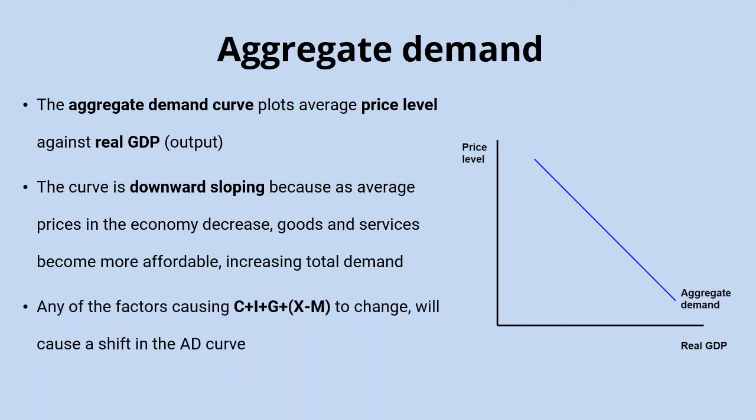Just like with demand, the position of the aggregate demand curve can change. The total aggregate demand is made up of its components: C plus I plus G plus X minus M — that's consumer spending, investment, government spending, and net exports. So anything causing these to change will shift that aggregate demand curve.